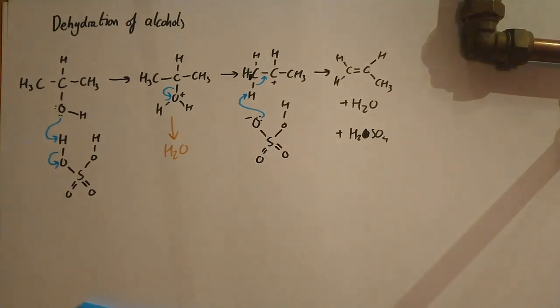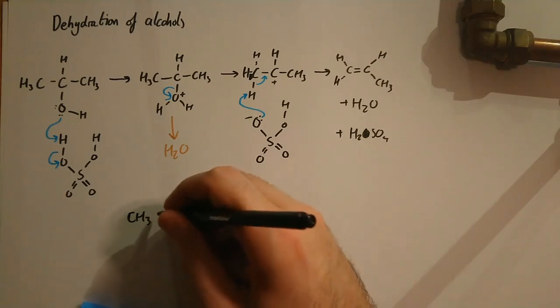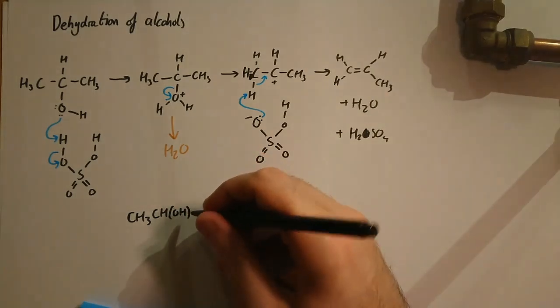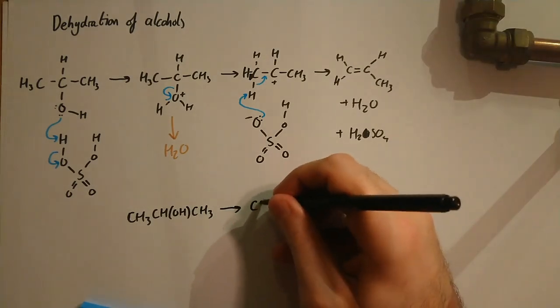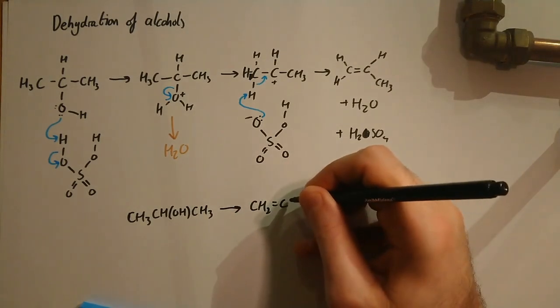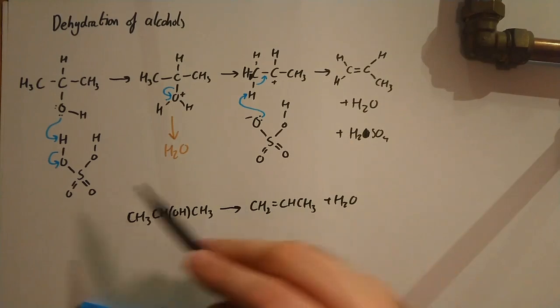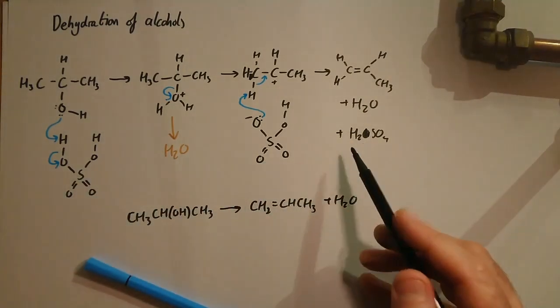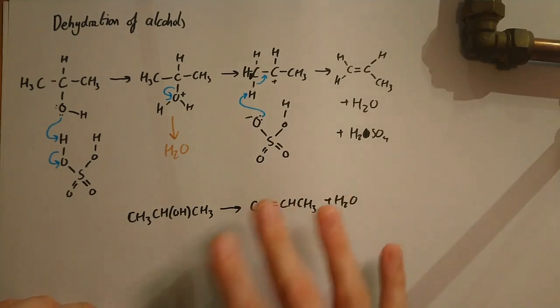But if we're going to write that out as a full equation, you're going to have your propan-2-ol, and it's going to go to propene and water. We don't put the sulfuric acid in there because it's there at the start, gets involved in the reaction, reproduced at the end. It's just a catalyst, so we don't need it in the actual equation. That's an absolutely fine mechanism for secondary and tertiary alcohols.